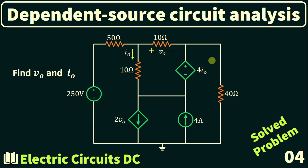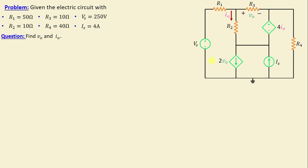Greetings! Welcome to this new video about Dependent Source Circuit Analysis, Problem Number 4. Let's consider this network consisting of four resistors labeled R1 through R4, along with one independent voltage source VS and one independent current source IS. We can observe the presence of dependent sources — specifically a voltage-controlled current source and a current-controlled voltage source. The question is to find the voltage VO and the current IO.